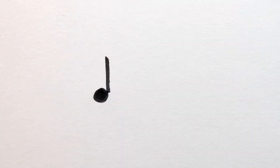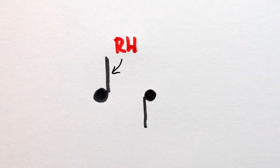But always remember that when a stem goes up, it has to be drawn on the right side of the note head. And when it goes down, it must be drawn on the left side.